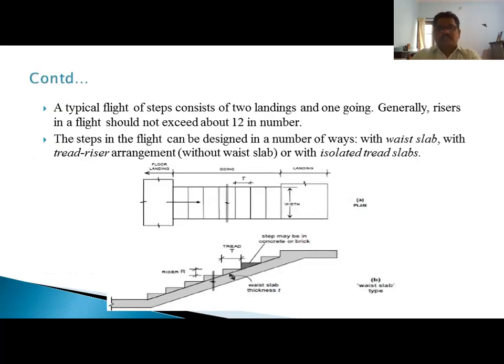A typical flight of steps consists of two landings and one going. Generally, risers in a flight should not exceed about 12 in number. The steps in flight can be designed in a number of ways: with waist slab, with tread-riser arrangement without waist slab, or with isolated tread slabs.